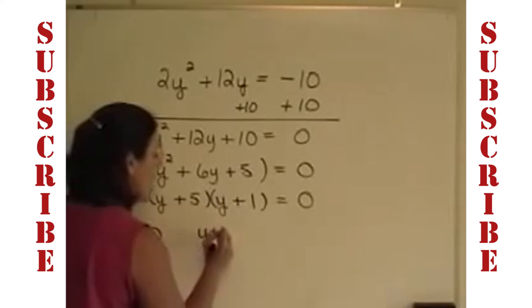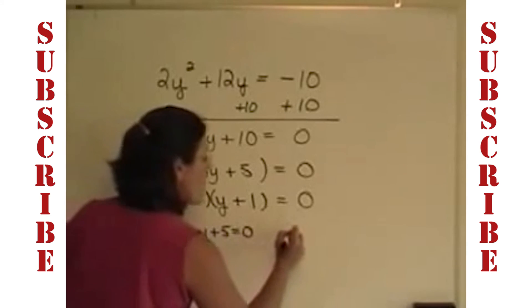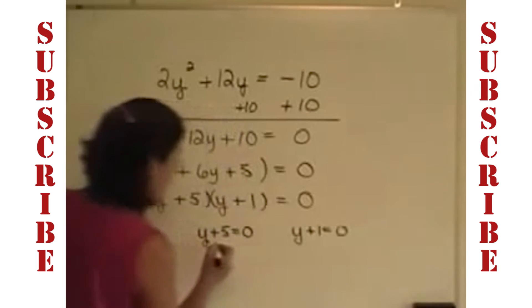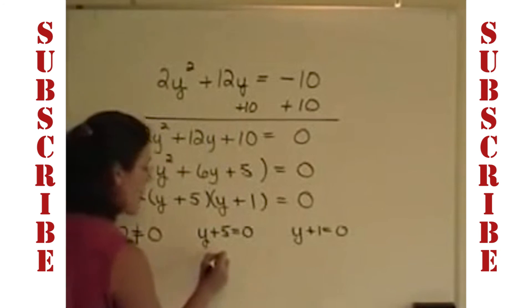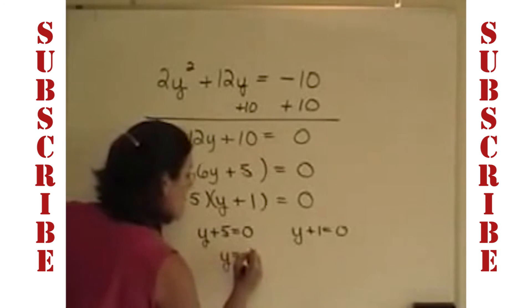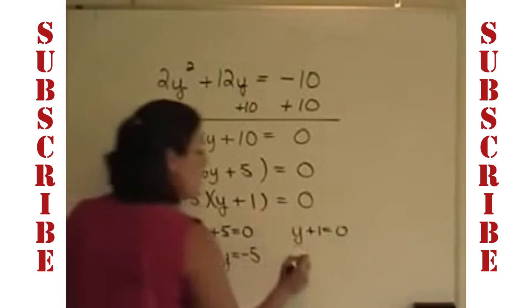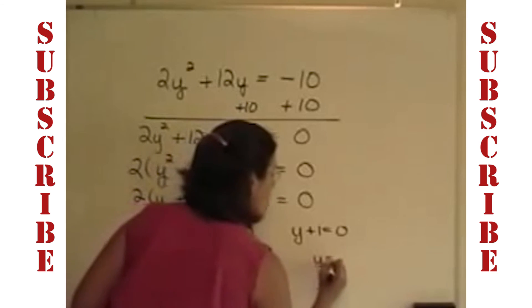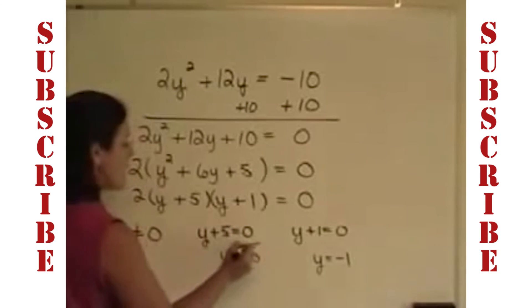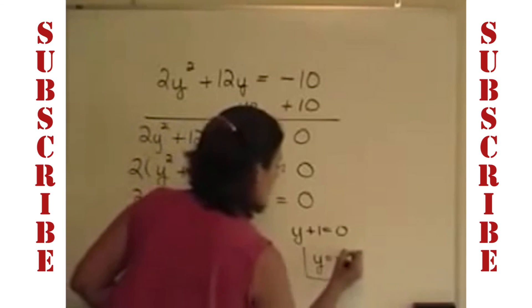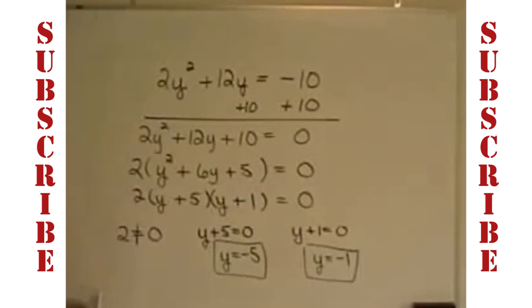However, the y plus 5 does need to be set equal to 0, and the y plus 1 as well. And in this case, I'll subtract 5 from both sides, and I'll get negative 5 as one of my solutions. Here, I'll subtract 1 from both sides, and I'll get negative 1 as one of my solutions. And these are my 2 answers to this equation.